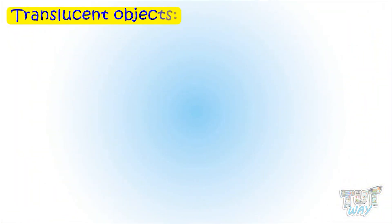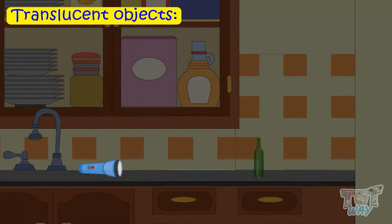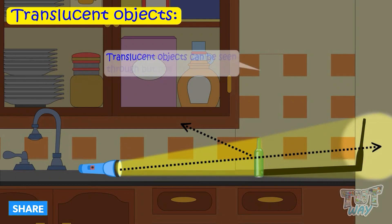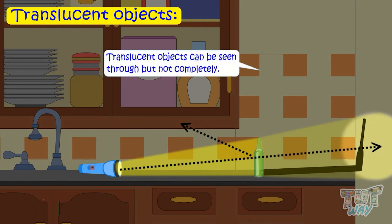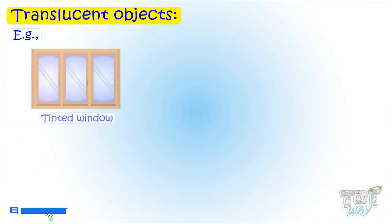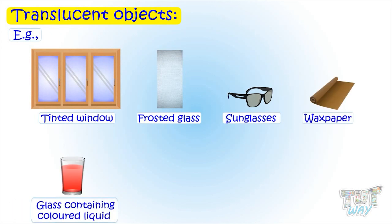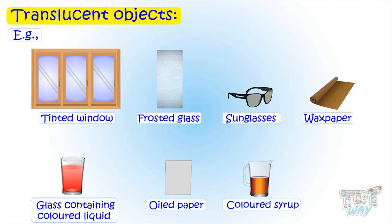Translucent objects. Translucent objects allow some light to pass through them, but not all light — some sunlight is absorbed or reflected. It can be seen through, but not completely. Examples include tinted windows, frosted glass, sunglasses, wax papers, colored liquids in a glass, oiled papers, colored syrups, and certain stones.